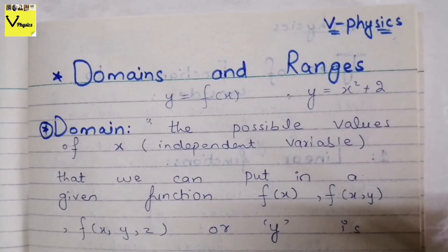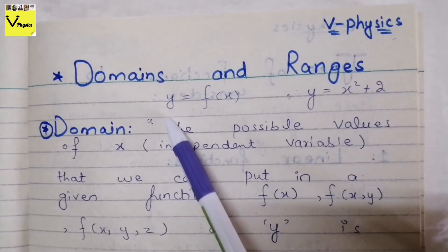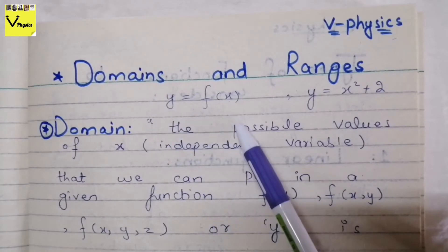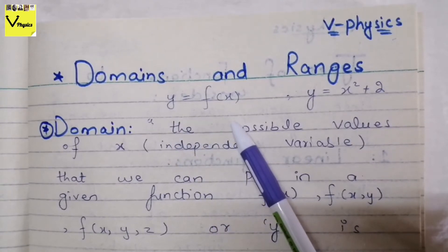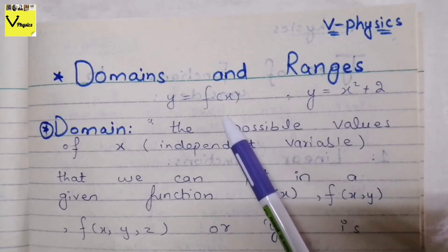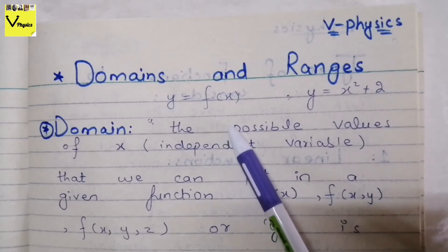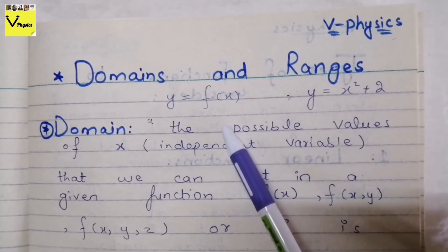Welcome viewers to our VPhysics channel. We are going to study the domains and range of single-variable functions, and in today's lecture we will see domains of single-variable functions. First, we should know what single-variable functions are. If we have a function y, then y is completely expressed in terms of a single variable, which can be x, s, or t — it can be expressed in any notation — but it is a single variable in that function, so that function will be called a single-variable function.